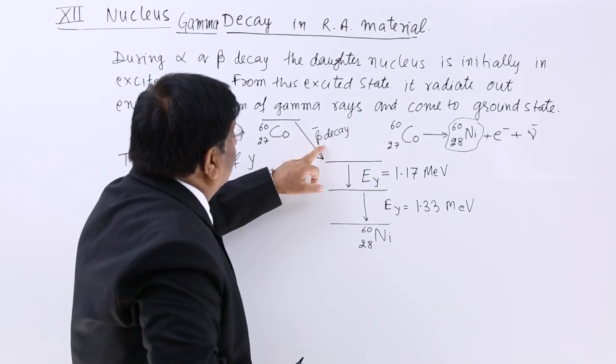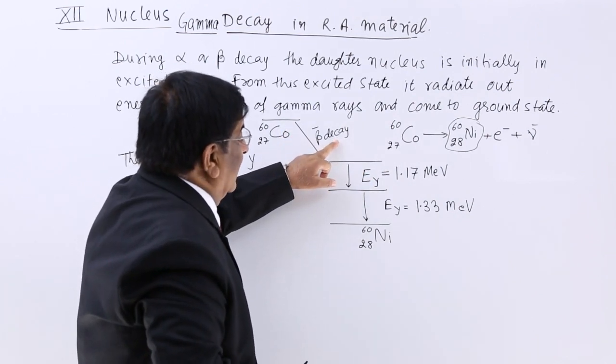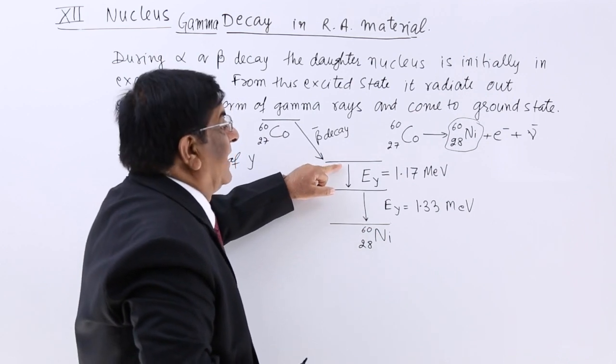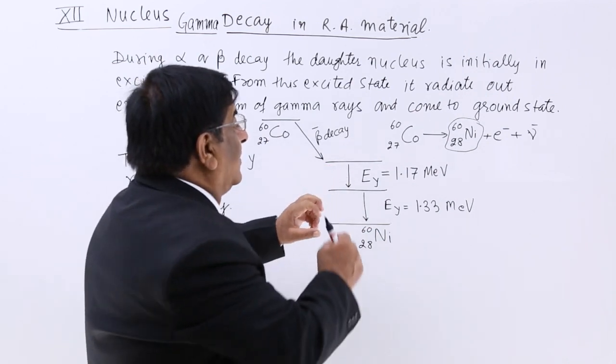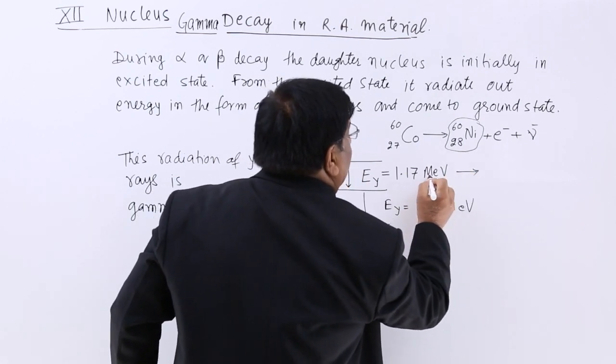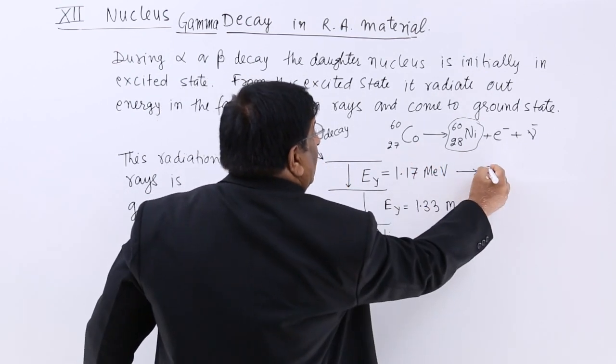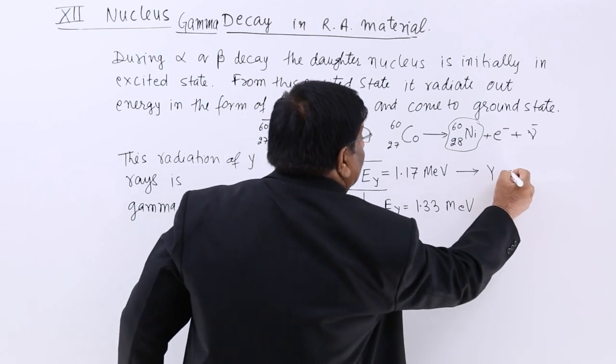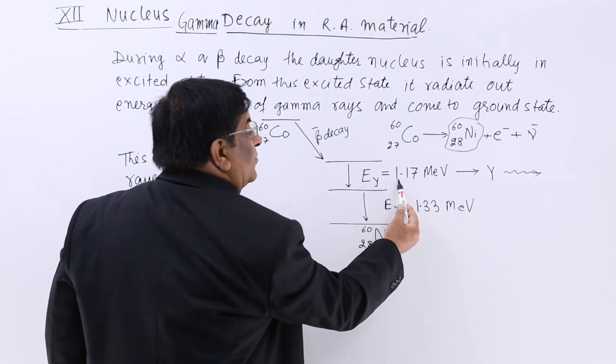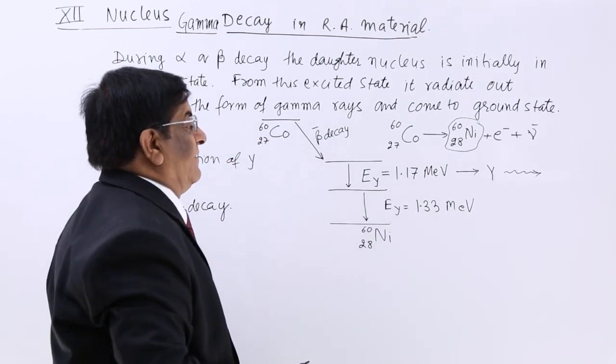Initially when beta decay is there then this nickel has got a large energy and what we find? One photon ejects out. That is 1.17 million electron volt. This photon ejects out and that photon is having how much energy? 1.17.